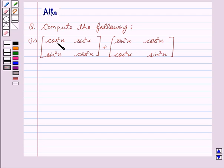Our first matrix is cos square x, sin square x, sin square x, cos square x. And our second matrix is sin square x, cos square x, cos square x, and sin square x.